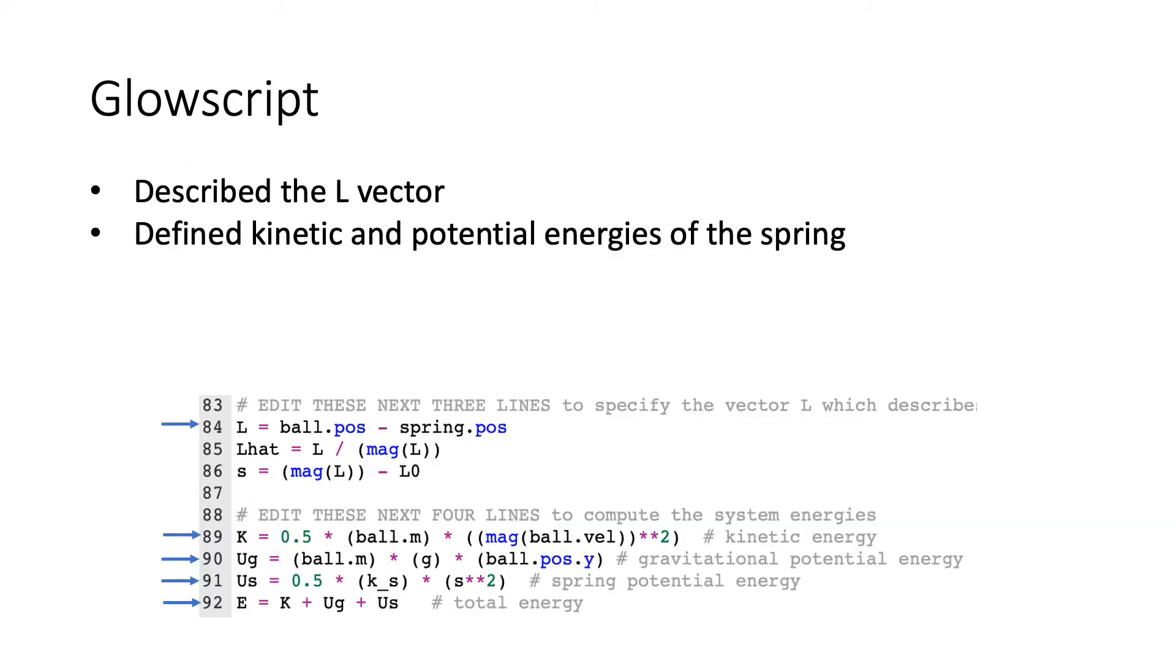In Glowscript we had to describe the L vector. This is defined in line 84 as the ball position minus the spring position, L being the displacement length. We also found the direction in L hat along with S, the displacement. Then we defined the kinetic and potential energy formulas of the spring in lines 89 through 92.